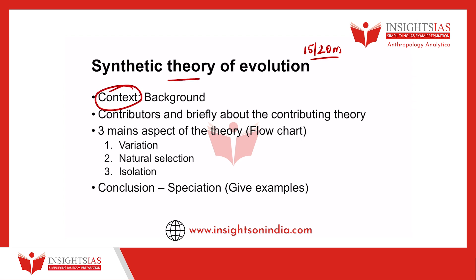Briefly write about the context of Synthetic Theory of Evolution — that means the background. As you all know, there are many theories given to explain the evolution of organisms: Darwin's theory, Lamarck's theory, etc. But Darwin's theory did not explain how variations arose or how they were passed on from one generation to the next. So Darwin's theory had two main flaws: it did not explain how variation took place and how they were passed on to the next generation.